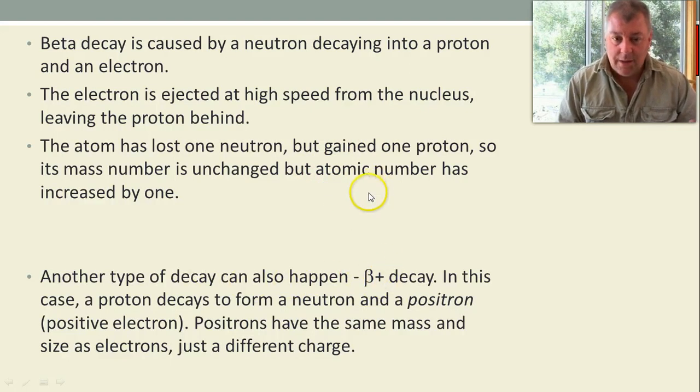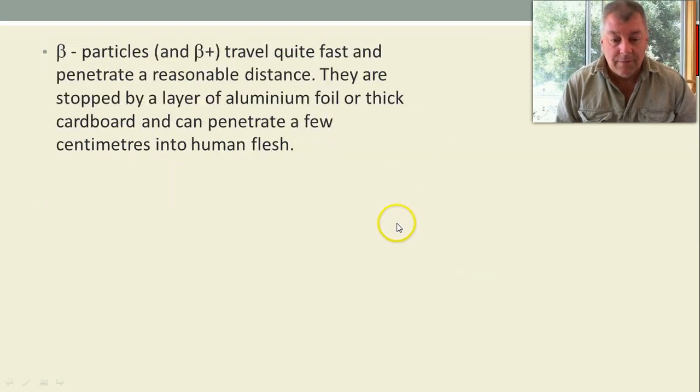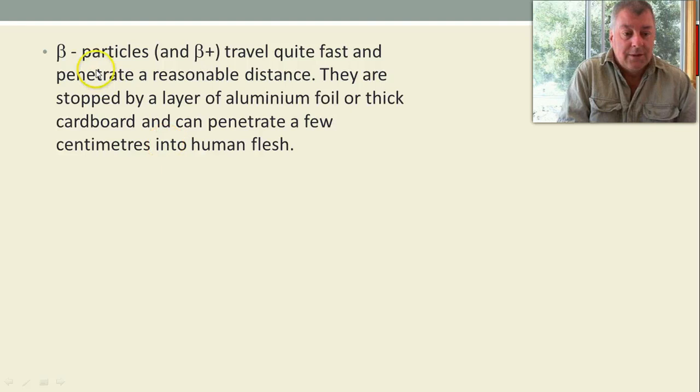So, generally speaking, we would call the beta decay we've just been talking about as beta minus decay, but in Tasmania we just call it beta decay. Because there is beta positive decay, which is producing a positron. But again, that's outside of our course, unfortunately, I would say.